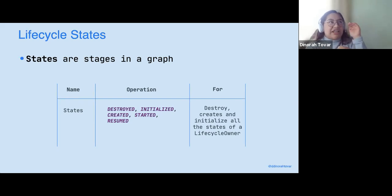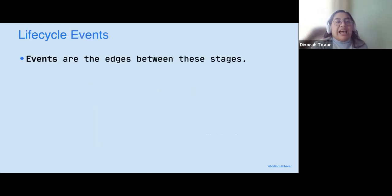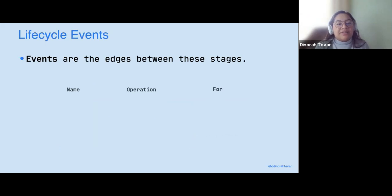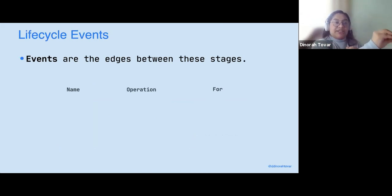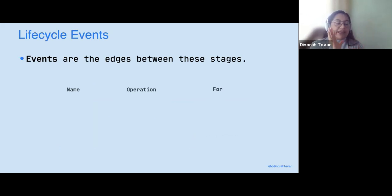They give you the stage — pretty much the position on a map of your lifecycle owner. Events are the edges between the other stages. The states are variables, while events give you the chance to use that state. So the state side are only variables, but the events are actually the code that makes everything work.